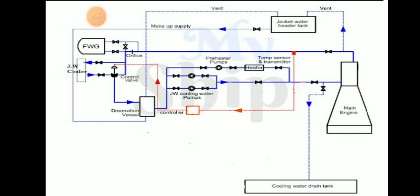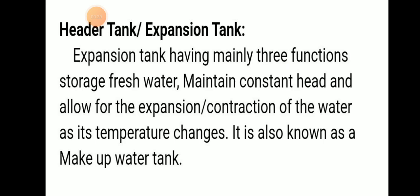Let's discuss the components of the jacket water cooling system of the main engine. First is the header tank or expansion tank. It has mainly three functions: storage of fresh water, maintaining constant head, and allowing for expansion or contraction of water as its temperature changes. It is also known as the makeup water tank.